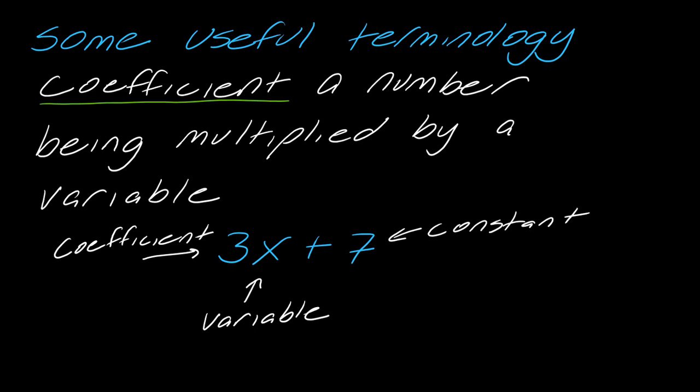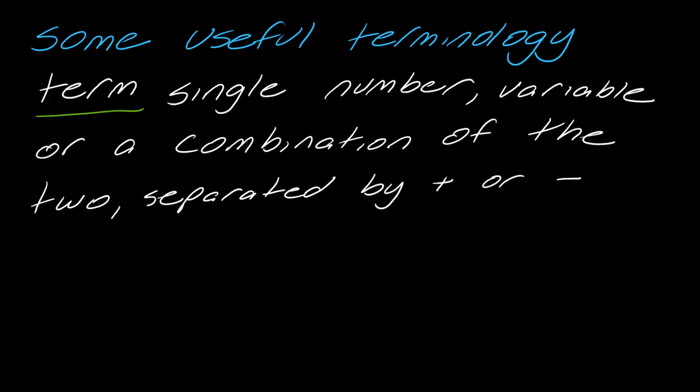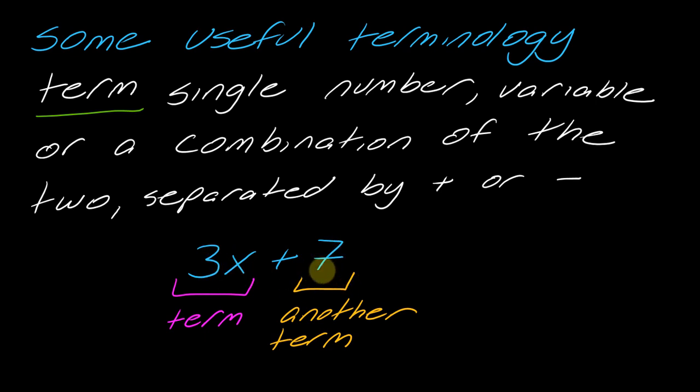A couple other terms. The next terminology is the word term. This is a single number, variable, or combination of the two separated by a plus or minus sign. Going back to this example of 3x plus 7, this right here is a term, and then this is a term. You can tell it's a new term if it's separated by a plus or minus sign like right here.